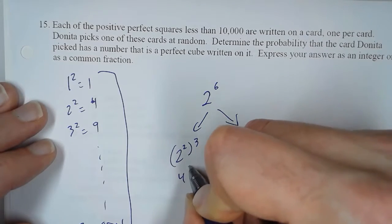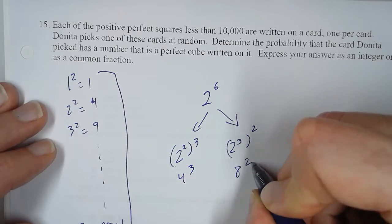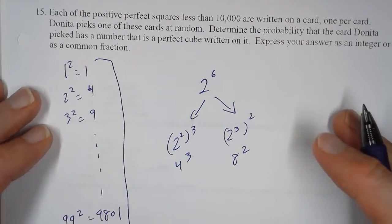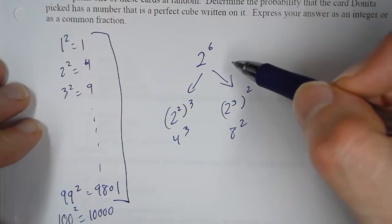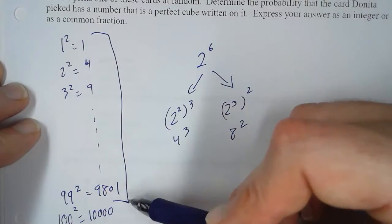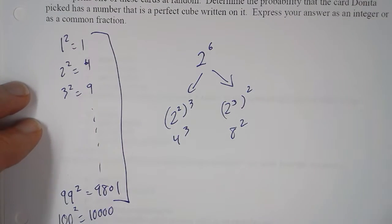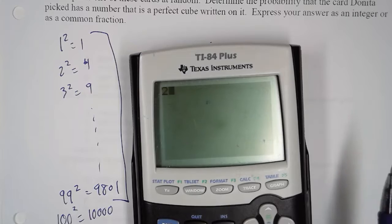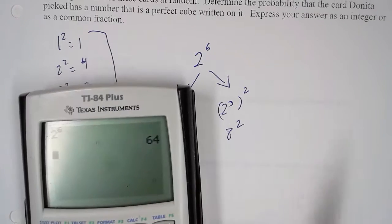So 4 cubed and 8 squared. So, the question is, how many perfect sixths are less than 10,000? So let's try it. 2 to the sixth is 64. So that works.